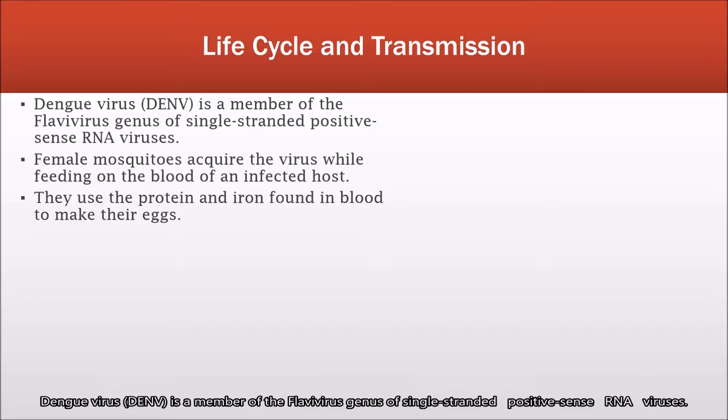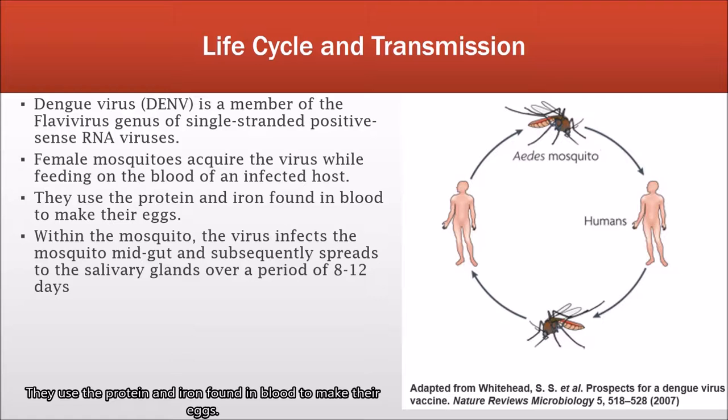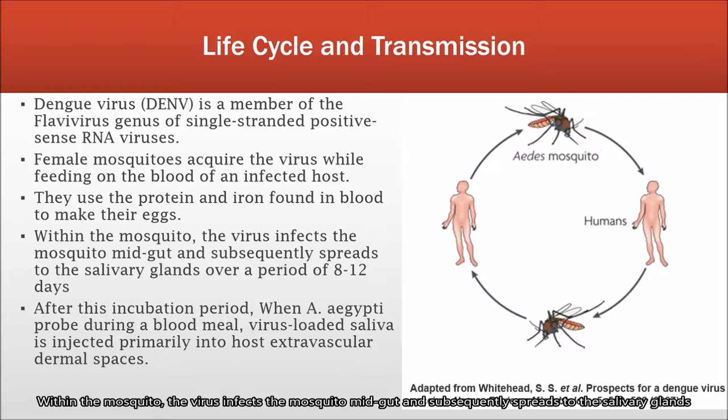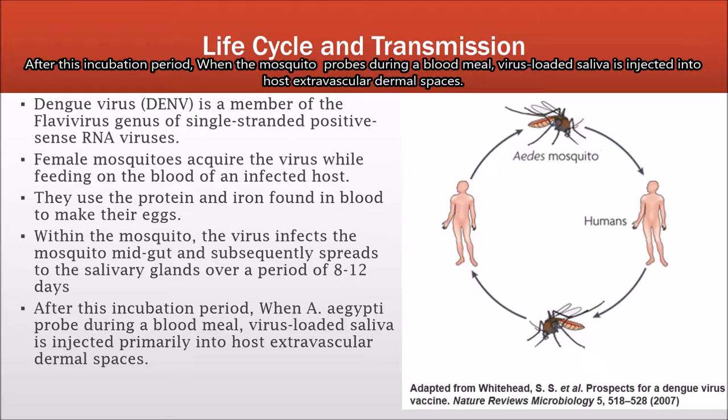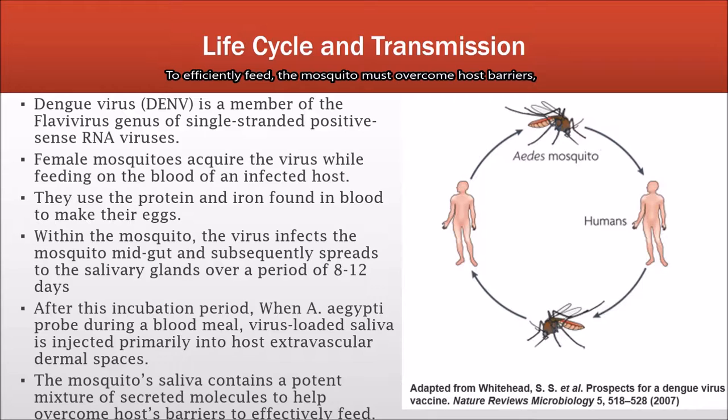Dengue virus is a member of the flavivirus genus of single-stranded positive-sense RNA viruses. Female mosquitoes acquire the virus while feeding on the blood of an infected host, using the protein and iron found in the blood to make their eggs. Within the mosquito, the virus infects the mosquito's mid-gut and subsequently spreads to the salivary glands over a period of 8 to 12 days. After this incubation period, when the mosquito probes during a meal, virus-loaded saliva is injected into the host's extravascular dermal spaces.